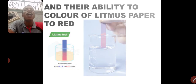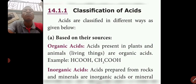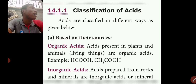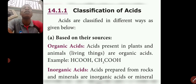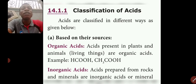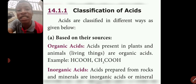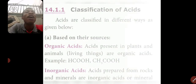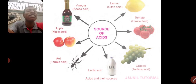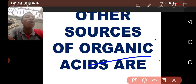We have two major categories of acid based on their sources. Number one, we have organic acids, and number two, we have inorganic acids. Organic acids are those present in living things like plants and animals. Inorganic acids are those that you prepare from mineral elements in the laboratory — you call them inorganic acids or sometimes mineral acids.